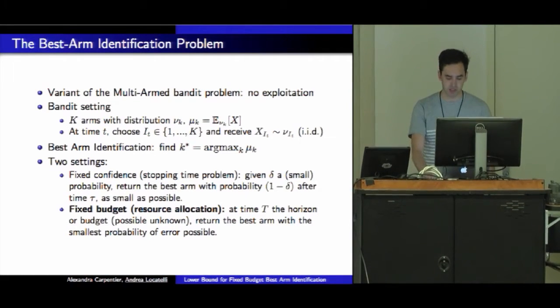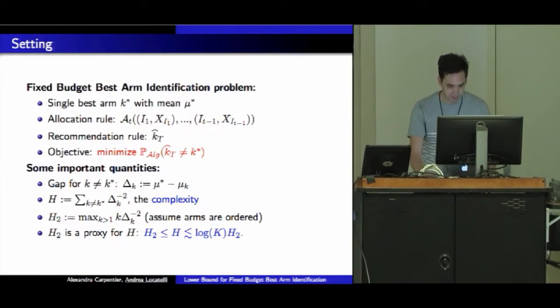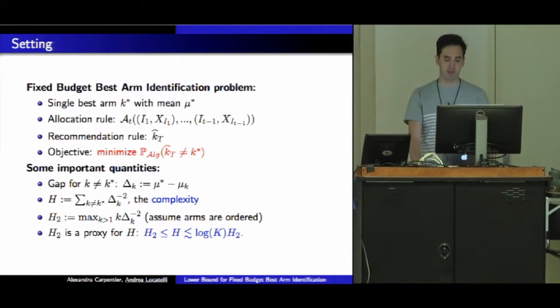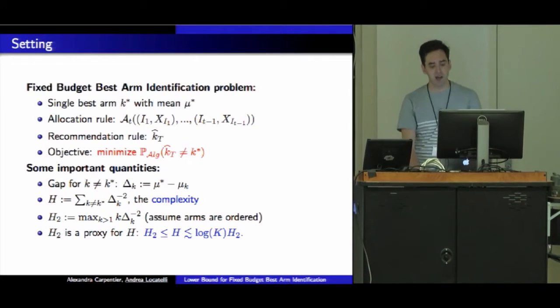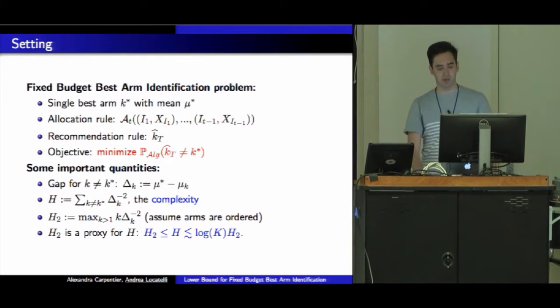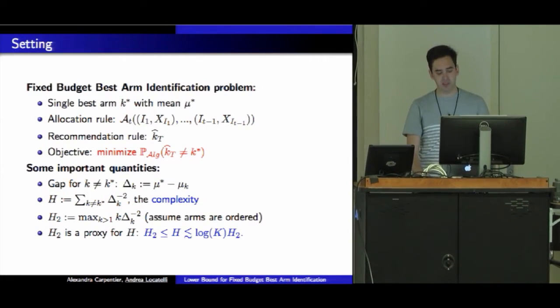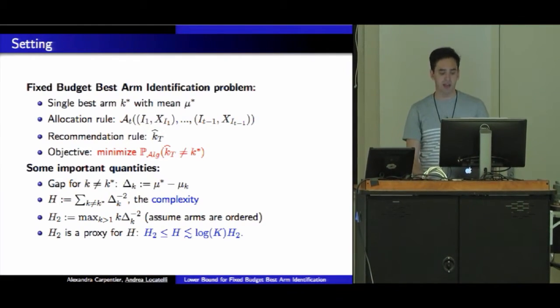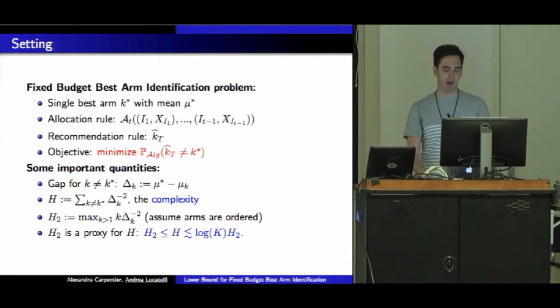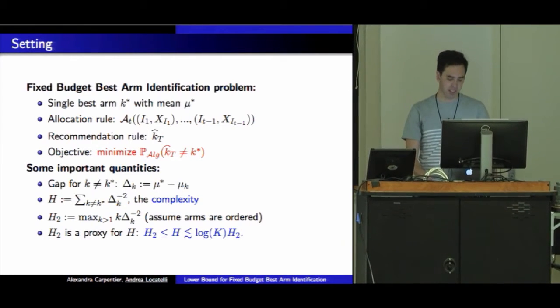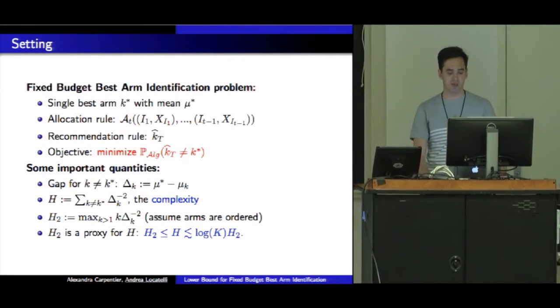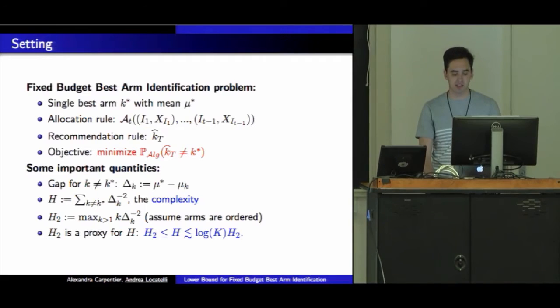In the fixed budget best arm identification problem, I assume I have a single best arm k star with mean μ star. What characterizes an algorithm is an allocation rule that tells me what arm to sample next, and a recommendation rule k hat capital T that tells me what arm to recommend as the best arm. My objective is to minimize this probability of error.